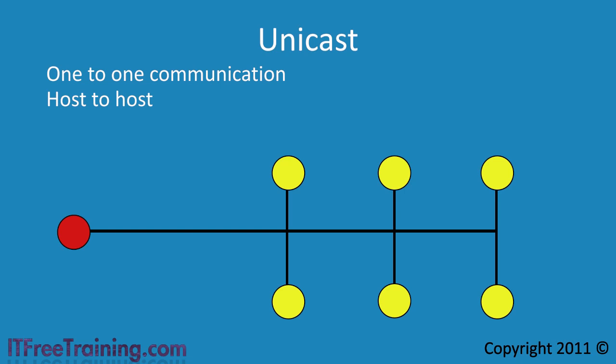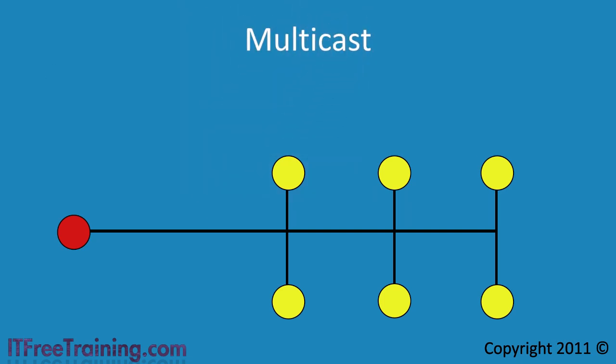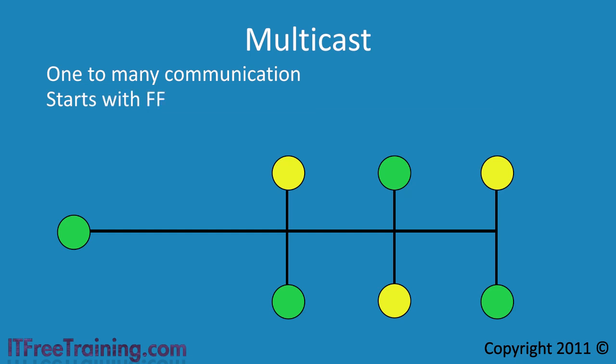The next type of address is multicast. This is when one packet is sent to multiple computers. For example, if you needed to install Windows 7 on 100 computers at once using unicast, every packet would need to be duplicated on the network 100 times. Multicast can send one packet to 100 computers at once. Assuming your network and software can support it, multicast can save you a lot of bandwidth. You can tell a multicast address because they start with FF.